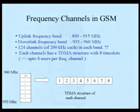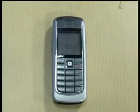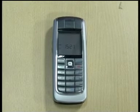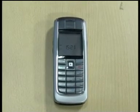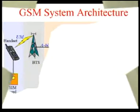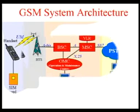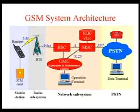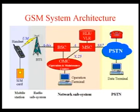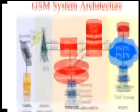The mobile handset contains hardware and software specific to the radio interface, and a SIM card specific to the GSM network. The Base Transceiver Station (BTS) is responsible for communication to and from handsets. The Mobile Services Switching Center (MSC) is responsible for all switching functions related to call processing, and is the interface between the GSM network and the PSTN (Public Switched Telephone Network).